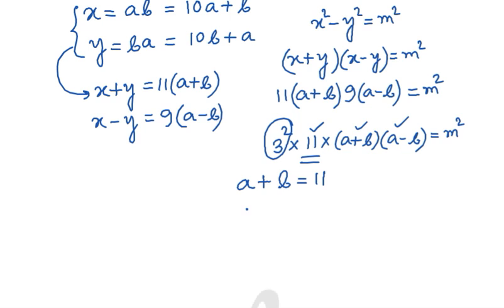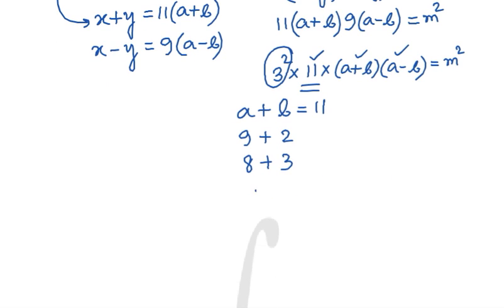So a + b equal to 11 will lead us to solutions like 9 + 2, 8 + 3 because as a and b are single digit whole numbers then 7 + 4 and 6 + 5. These are the possible solutions for a and b.